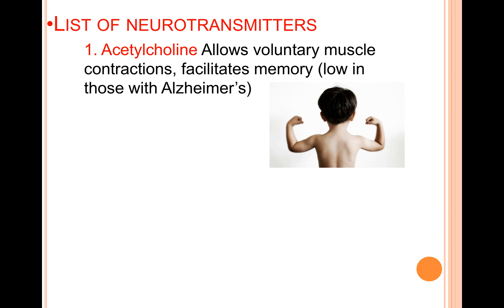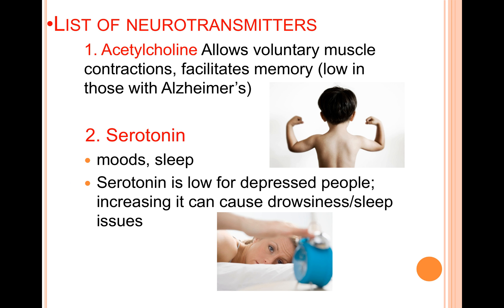Acetylcholine has a number of important functions that are relatively independent of one another, much like many neurotransmitters. It controls voluntary muscle movement and facilitates memory. Serotonin governs moods and sleep — serotonin is low for many depressed people, and antidepressants help raise serotonin, though a side effect can be drowsiness or sleep issues. This raises an important point: when we manipulate neurotransmitter levels through drugs, we're not just changing the targeted function — we're likely influencing other behaviors and functions as well.